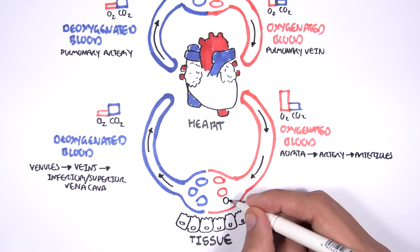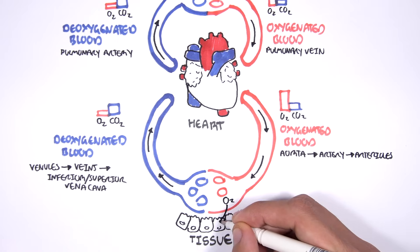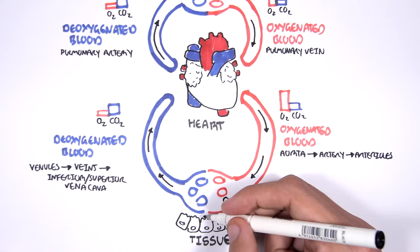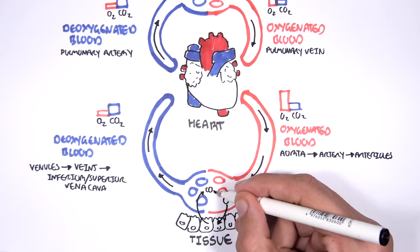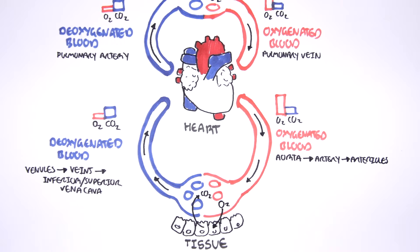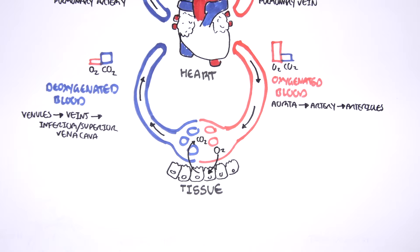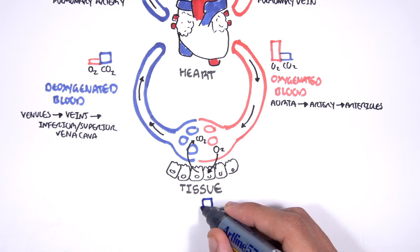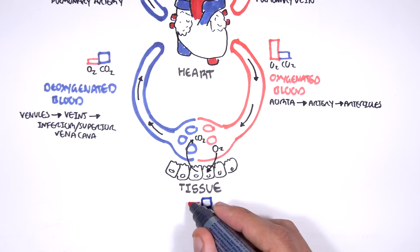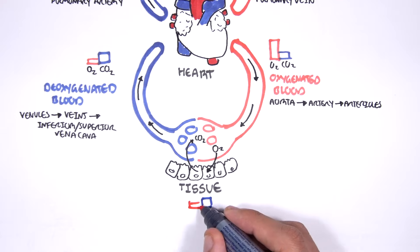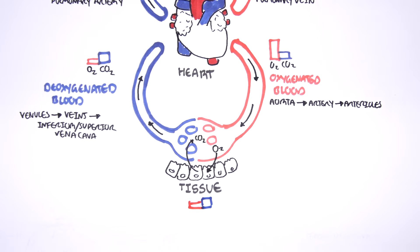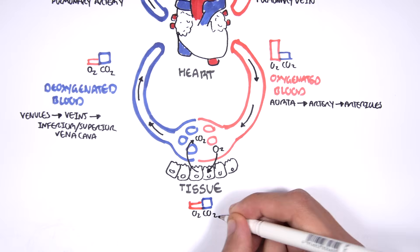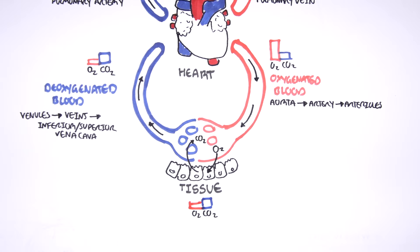Within the tissues, oxygen is offloaded so the tissue can use it as energy, and then carbon dioxide is released back into the blood as a byproduct. Within the tissues, if we look at the partial pressure of the gases, we have slightly higher amounts of carbon dioxide compared to oxygen.